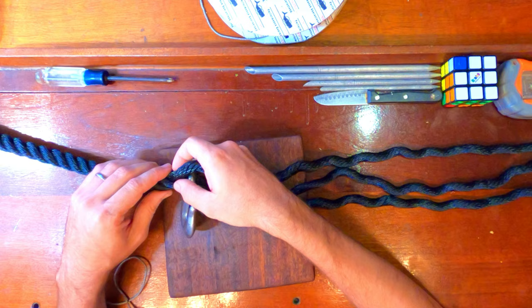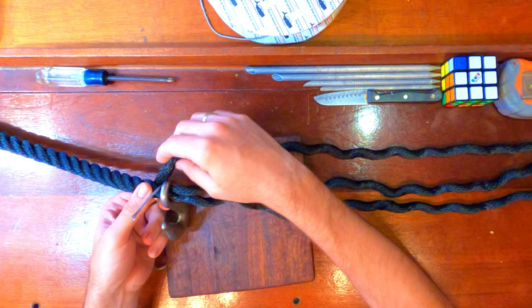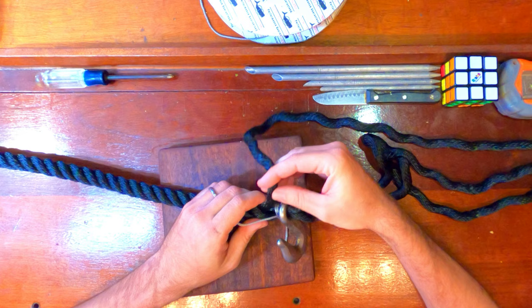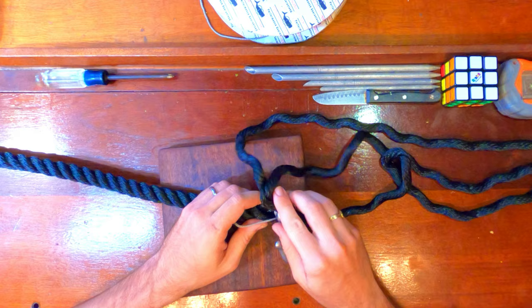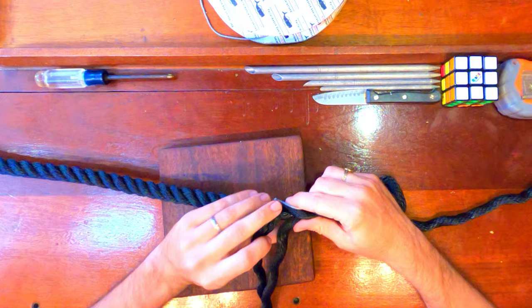Now we're going to come around, we're removing the first strand from the constrictor knot. The next step is going to look a lot like a long splice. What we're going to do is we're going to be unlaying the first strand while laying in the second strand, so we're going to pass over it and it's going to come in here. This is just like doing a long splice. The first strand comes out, second strand goes in.